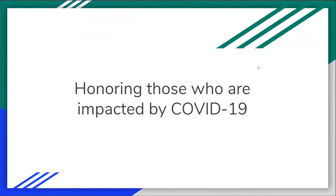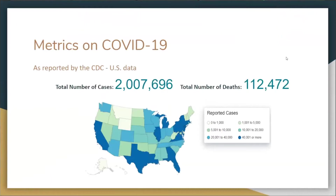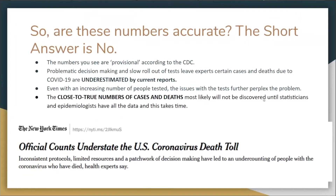As of this morning there are a little over 2 million cases in the U.S. and 112,472 deaths in the United States. The question we're asking today is: do these numbers reflect everyone who was diagnosed with COVID-19? The short answer is no — these numbers are estimates. Many researchers strongly assert that COVID-19 data underestimates the number of cases and deaths due to COVID in the U.S. and globally.